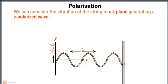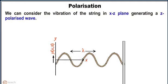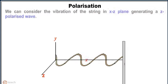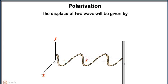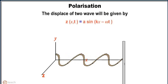We can consider the vibration of the string in the x-z plane generating a z polarized wave. The displacement of two wave will be given by z in terms of x, t equals a sin kx minus omega t.